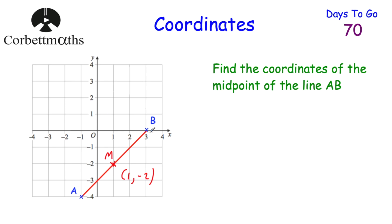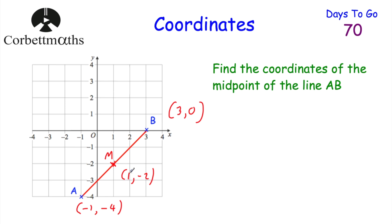There's another way to find the midpoint — you add the two coordinates together and halve them. The coordinates of point B are three, zero, and point A are negative one, negative four. To find the midpoint: negative one plus three equals two, halved is one. And negative four plus zero equals negative four, halved is negative two. That gives us the midpoint coordinates one, negative two quickly and easily.